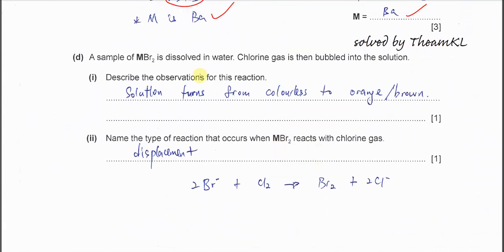A sample of MBr2 is dissolved in water. Chlorine gas then bubbles into the solution. We know that this reaction will happen. The chlorine will displace the bromide from the solution. The chlorine itself will get reduced and the bromide will oxidize to bromine. The type of reaction is better to mention as displacement. Even though this is a redox reaction, the better answer is displacement.